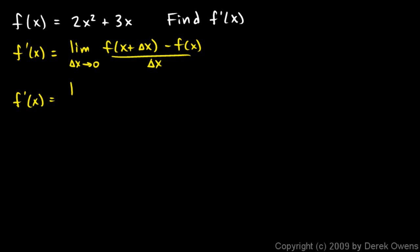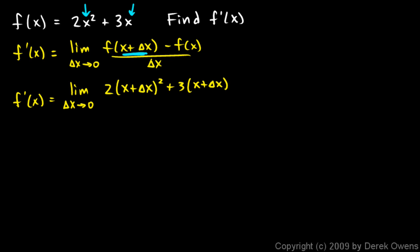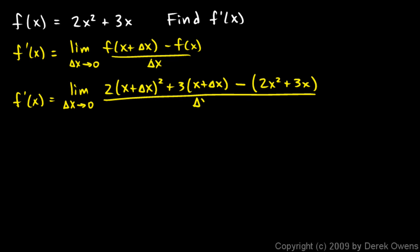So let's apply this to our function. F prime of x will be the limit as delta x approaches 0. Now f(x + delta x) means we take x + delta x and substitute it into the function, giving us 2(x + delta x)² + 3(x + delta x). That is f(x + delta x). Then we subtract f(x), which is 2x² + 3x, all over delta x.